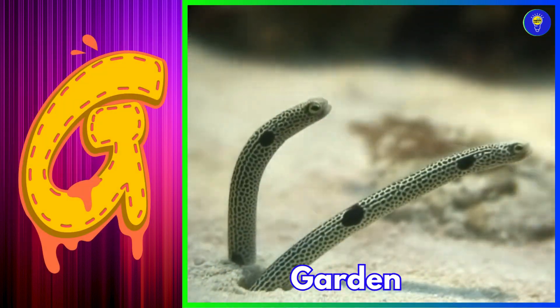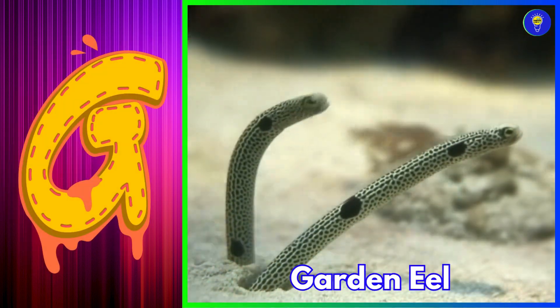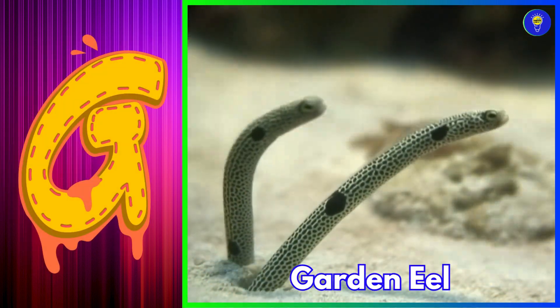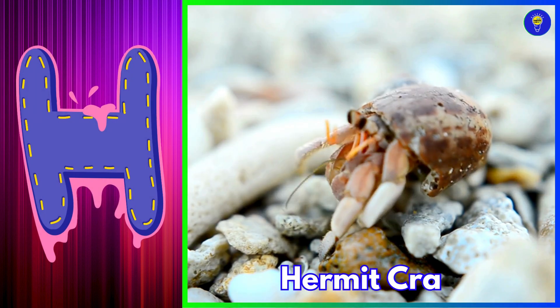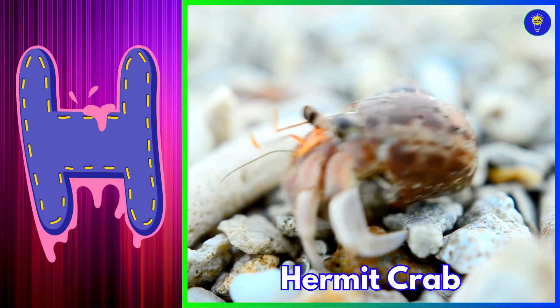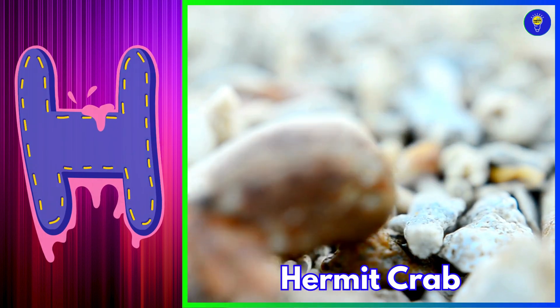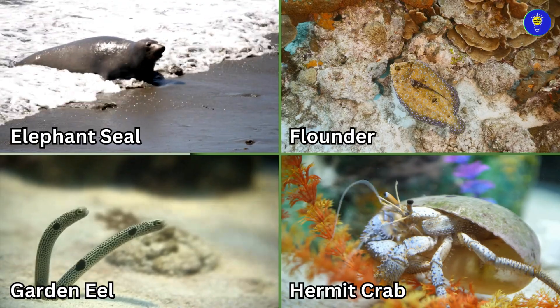G is for garden eel. Guh, garden eel. H is for hermit crab. Ha, hermit crab.